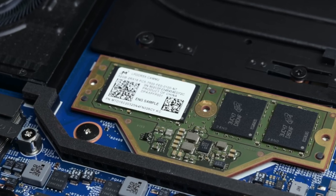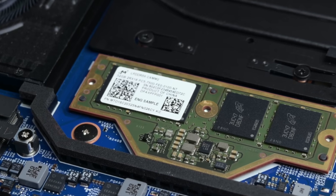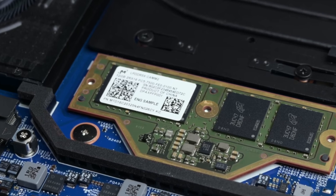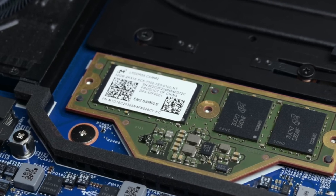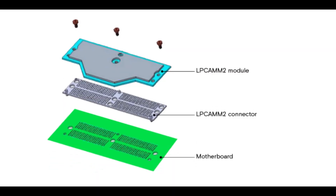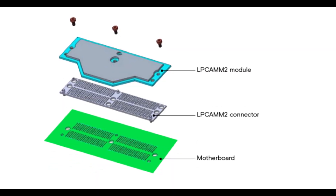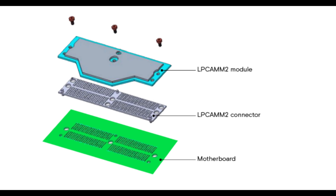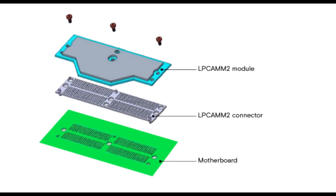Better thermal management: the horizontal layout and reduced height of CAM2 modules improve airflow and thermal management within the device. This helps keep the system cooler and maintains performance even under heavy loads.